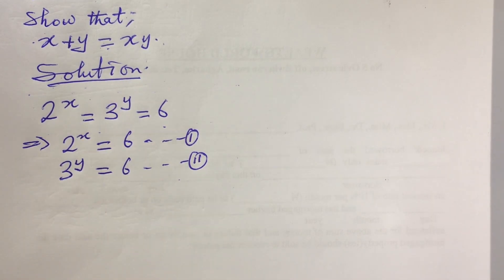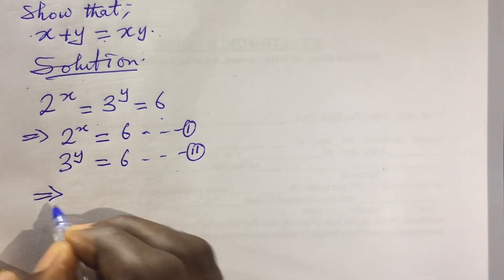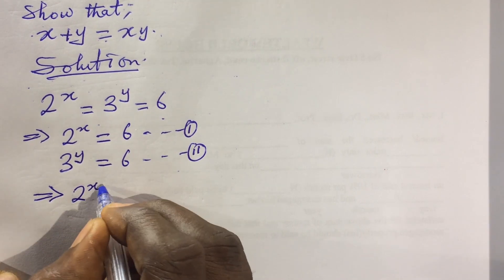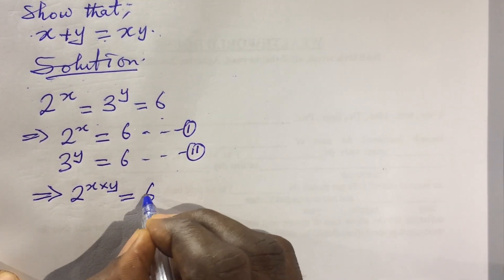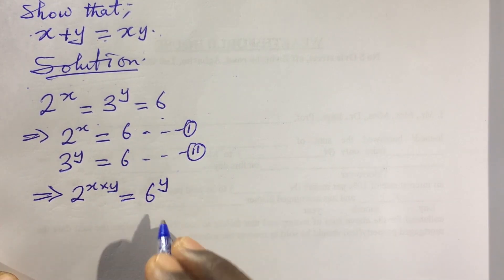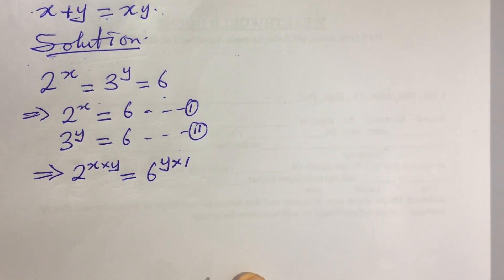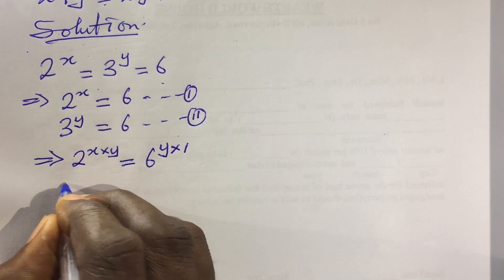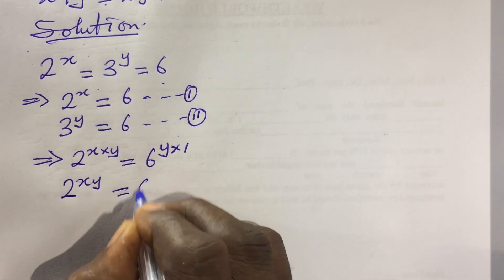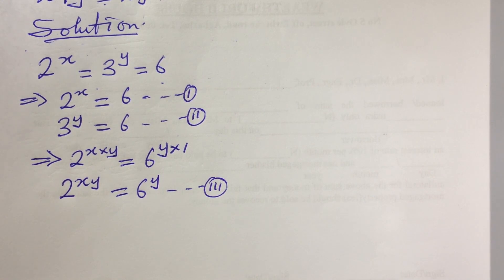Now because we are asked to prove x plus y equals xy, let's take equation 1 and multiply the exponent by y. This now implies 2 to the power of xy equals 6 to the power of y — since the exponent on the right-hand side of equation 1 is 1, times 1 gives 1. Let's label this equation 3.